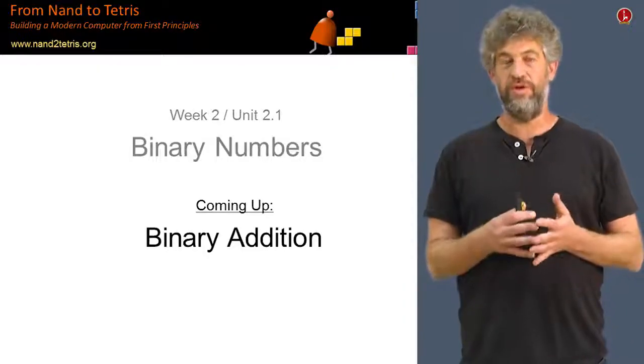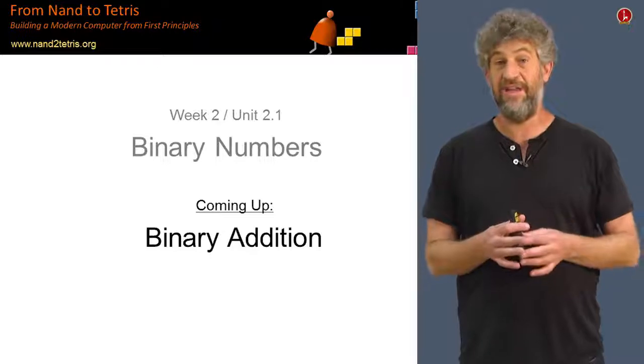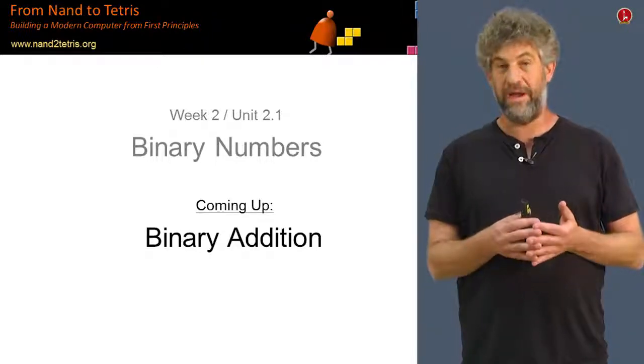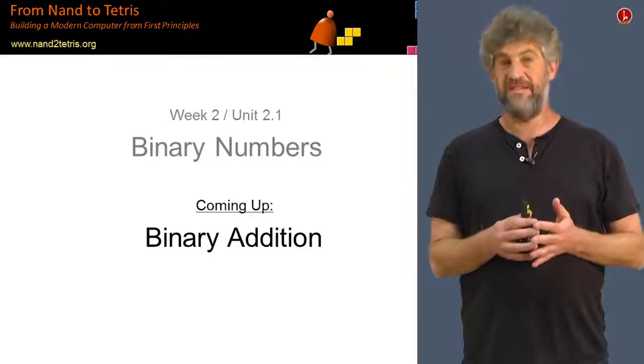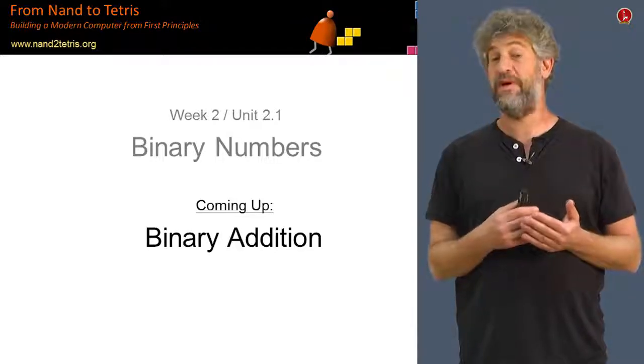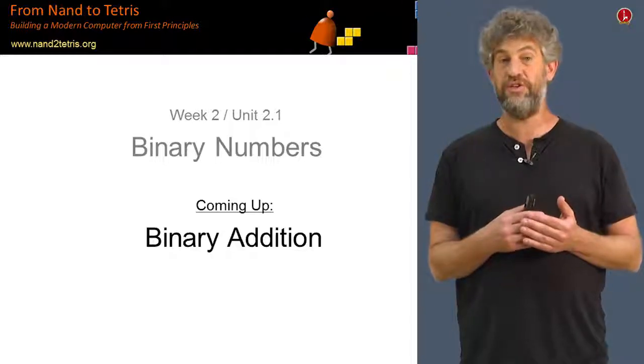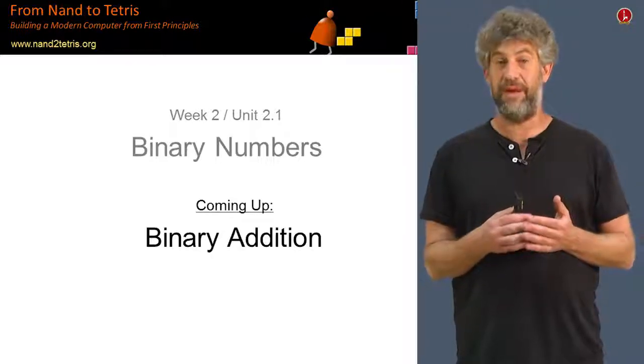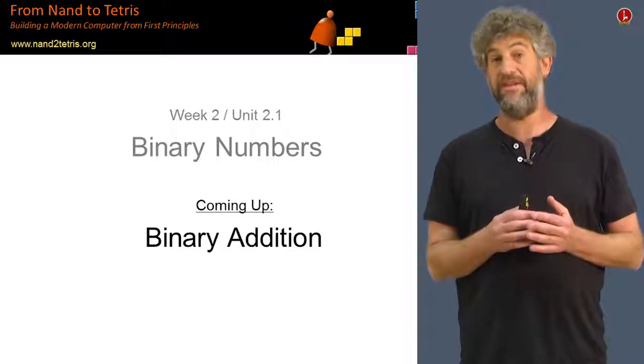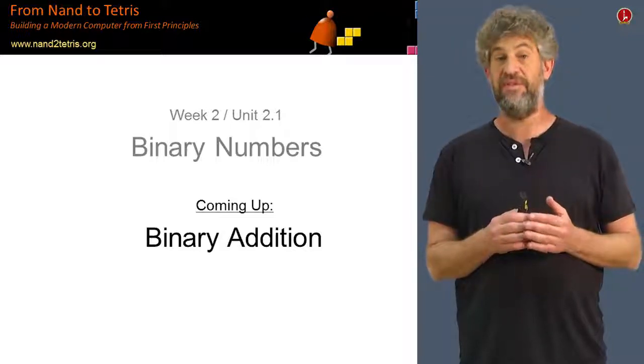So this concludes this unit where basically we discussed how you can represent integer numbers within a binary system. In the next unit, we're going to actually discuss how can we actually perform arithmetic operations, in particular addition on these represented binary numbers. Once we get that under our belt, we will go back and discuss the issue of negative numbers in unit 3.